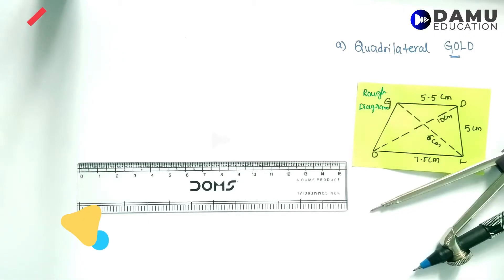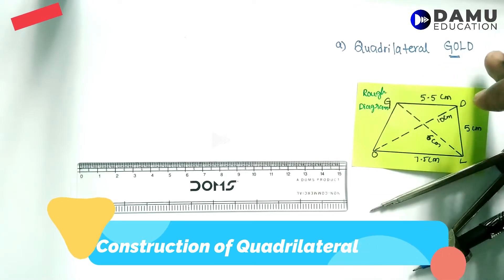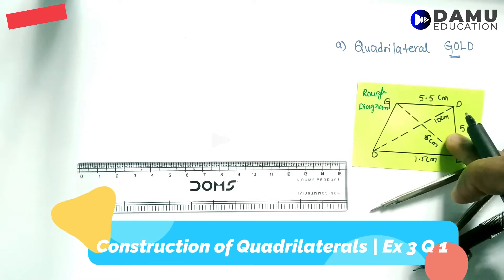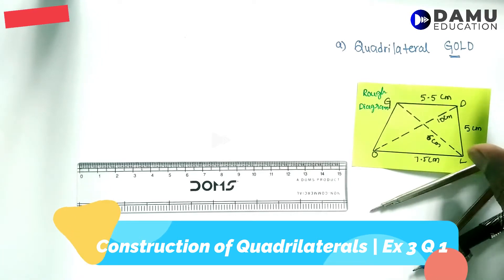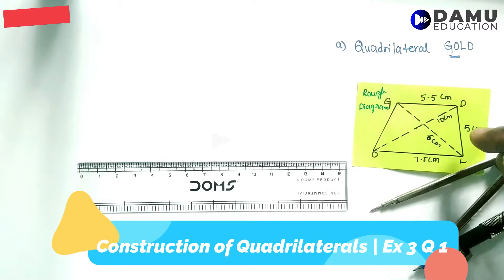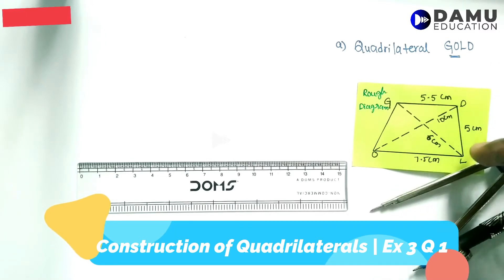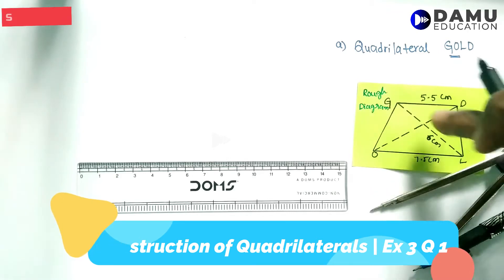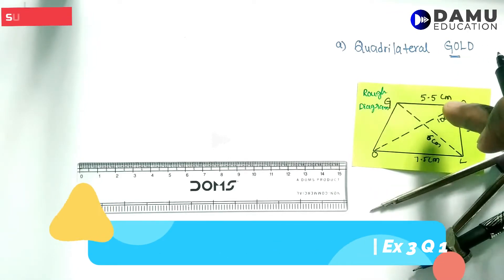Welcome to this module. We are going to discuss the construction of quadrilateral GOLD. Like previous modules, here they are given two diagonals and after that we have to construct the quadrilateral. The given dimensions are: OL = 7.5 cm, LD = 5 cm, OD = 10 cm, DL = 6 cm, and GD = 5.5 cm.